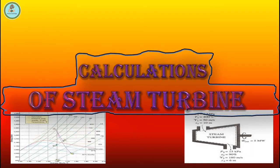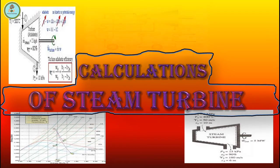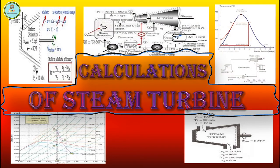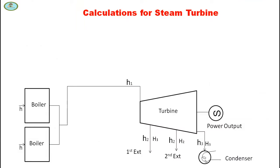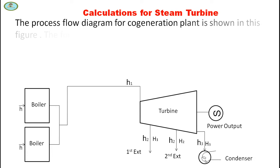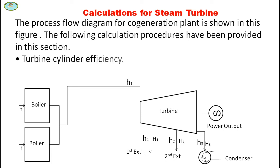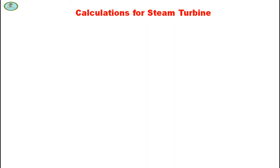Hello friends, welcome back to my channel BOE Tutorials. In this video we will discuss about calculation of steam turbine. The process flow diagram for a cogeneration plant is shown in this figure. The following calculation procedure has been provided: first, turbine cylinder efficiency, and second, overall plant heat rate.